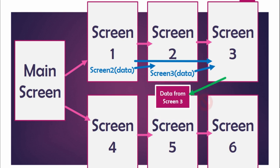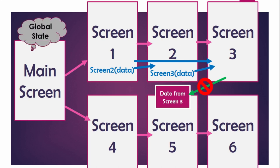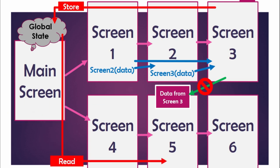Now the problem arises — for example, if you want to send data from screen three to screen five, there is no direct connection between them. We cannot call screen five from screen three. To make data modified in screen three accessible to screen five, we need global state. We can save data from screen three to the global state, and screen five can simply read it from there.